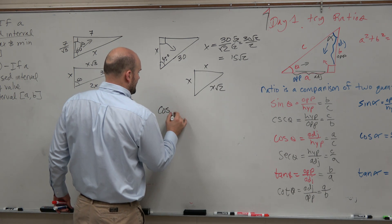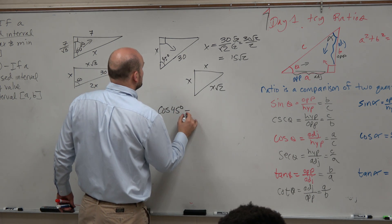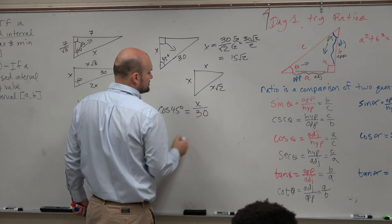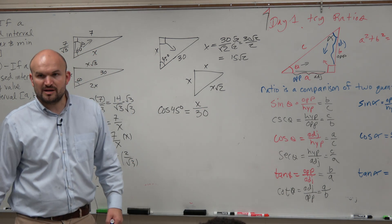So I could say cosine of 45 degrees is equal to the adjacent side over the hypotenuse. I should have done this one first. It might have made a little bit more sense.